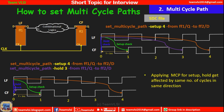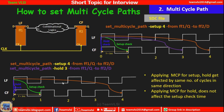To summarize the interaction: applying multi-cycle path for setup affects the hold check by the same number of cycles in the same direction. However, applying multi-cycle path for hold does not affect the setup check timing. So setting hold MCP only adjusts hold, while setting setup MCP affects both setup and hold.